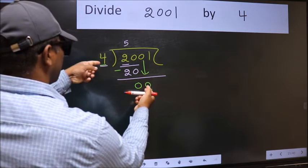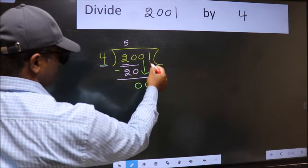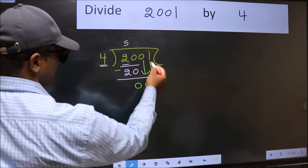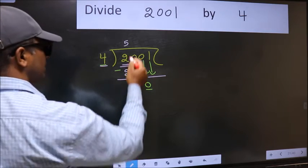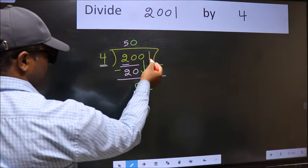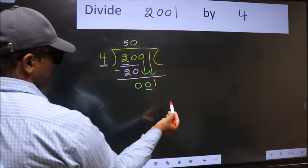0 is smaller than 4. So we should bring down the second number. And the rule to bring down the second number is we should put 0 here. Then only we can bring down the second number.